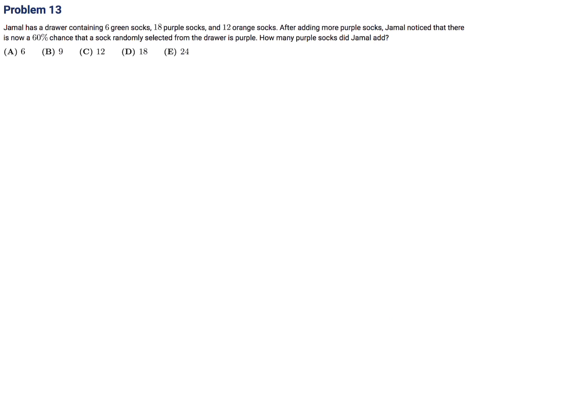Jamal has a drawer containing 6 green socks, 18 purple socks, and 12 orange socks. After adding more purple socks, Jamal noticed there is now a 60% chance that a randomly selected sock is purple. We'll call the number of purple socks added x.